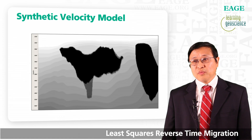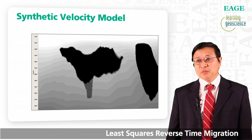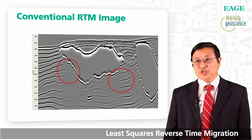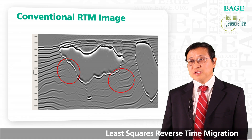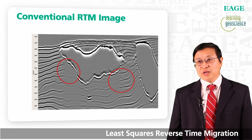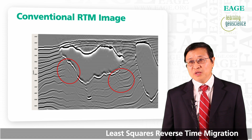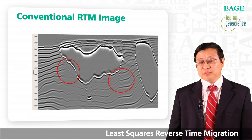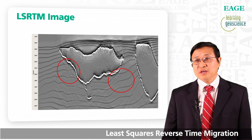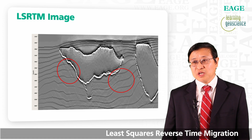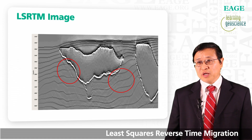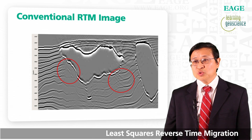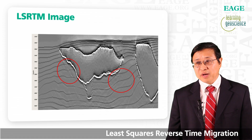Here is another synthetic model — a velocity model with two salt bodies, along with a reflectivity model. In the conventional RTM image, in the sub-salt area, especially in the shadow area right below the base of salt, RTM does not give a good image and is contaminated by many migration artifacts. Here is the least squares RTM image — it significantly improves the sub-salt image in the shadow area and also removes or reduces many migration artifacts compared with regular RTM.